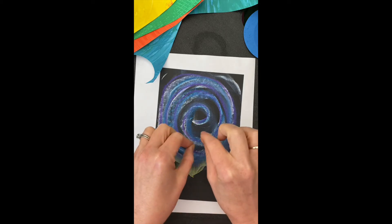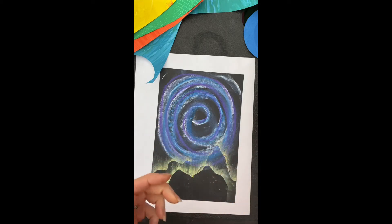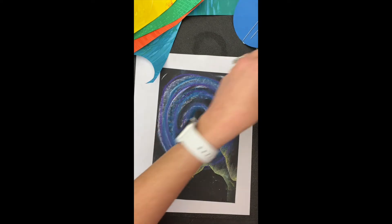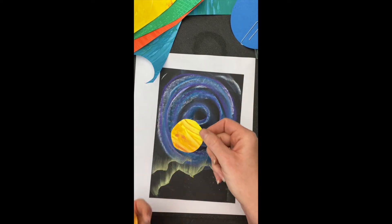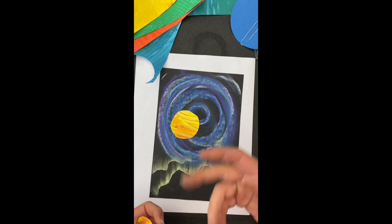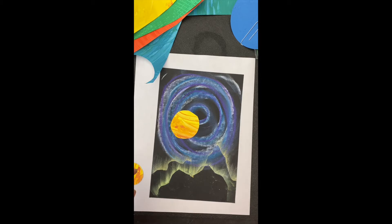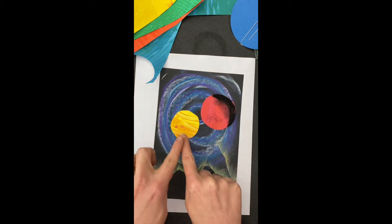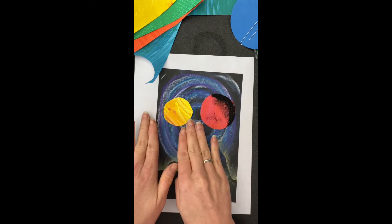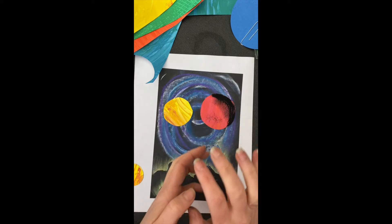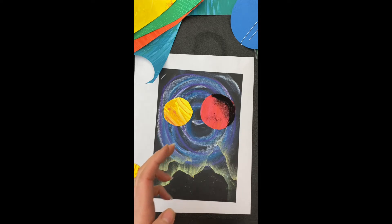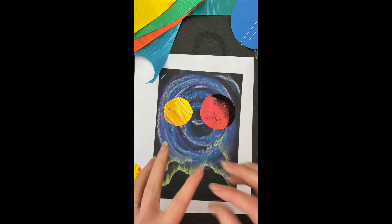So now we need to add the planets. And what we talked about today in class is how do we take a two-dimensional object, which is just like a shape, like a circle, square, triangle, and turn it into a form. And form is something that has three dimensions. So we're going to do that by adding the illusion of a shadow. It makes it go from a 2D flat shape to more of a three-dimensional round shape, giving that illusion of space and depth.